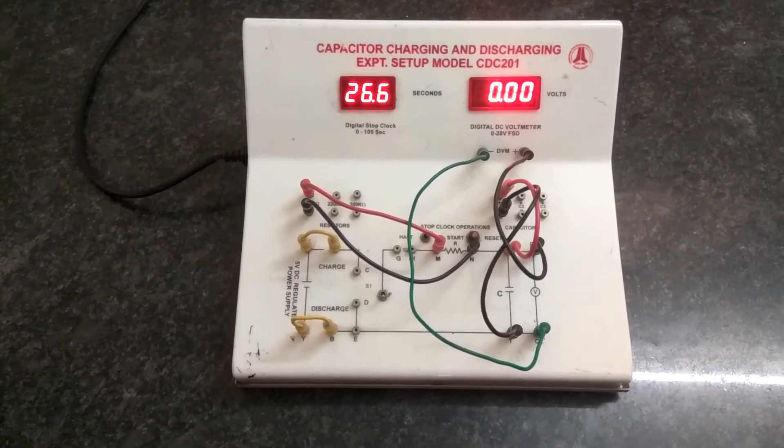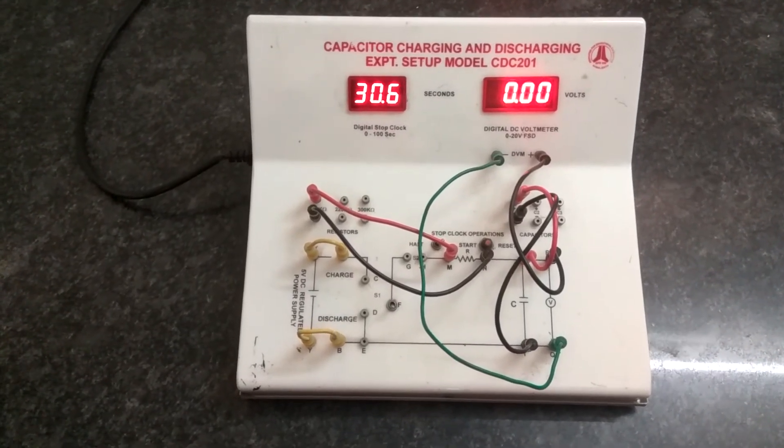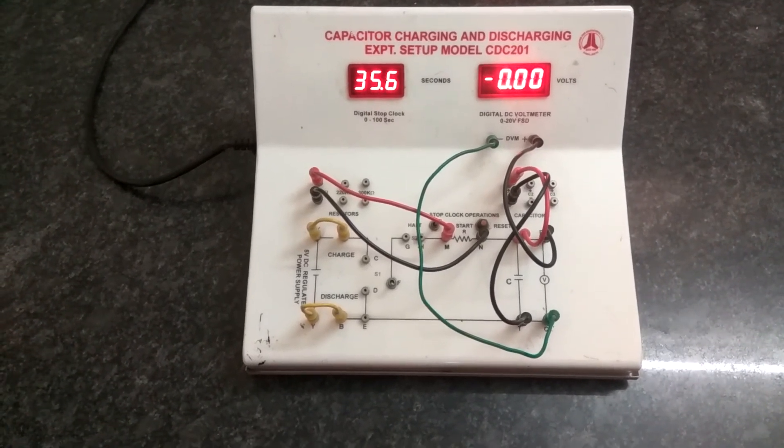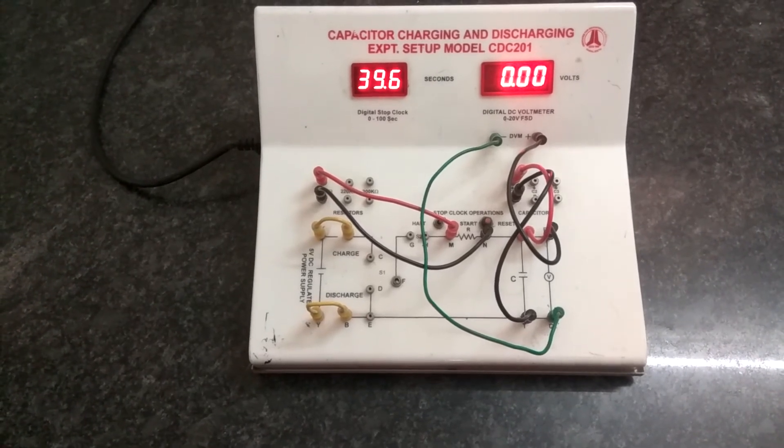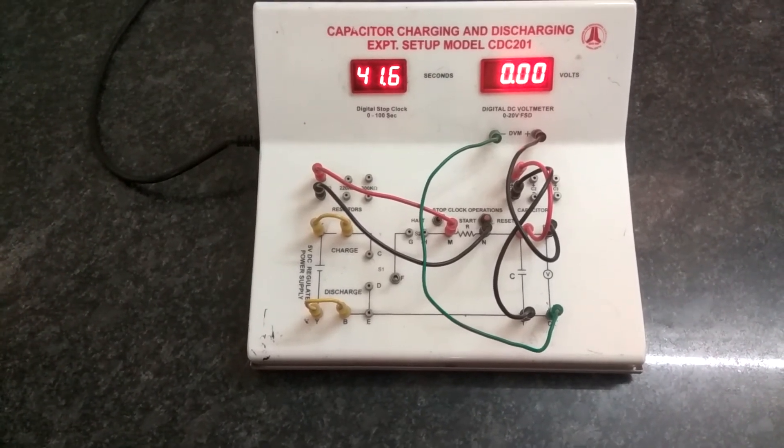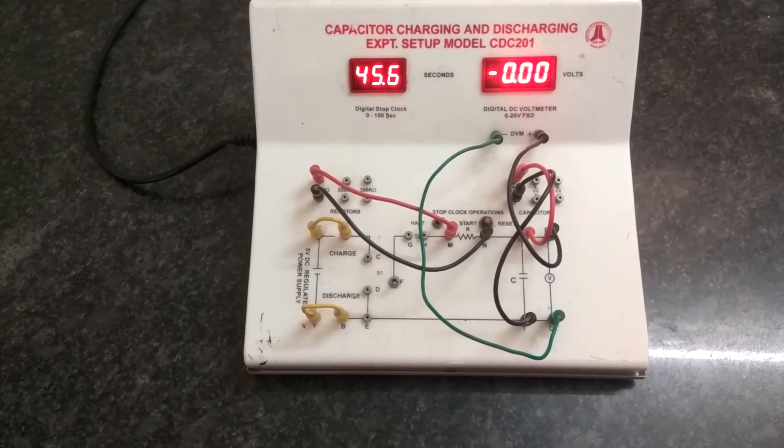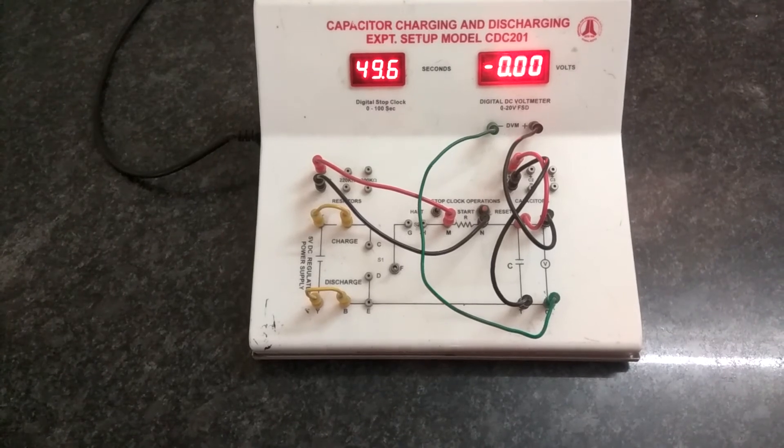We have the dielectric constant relation as K equals to 1.44 capital Tp into 10 power minus 3 into D divided by epsilon naught A into R. This is a reduced formula, modified one, where TP being the time interval where the charging and discharging curve meets, the corresponding time interval will be taken as TP.